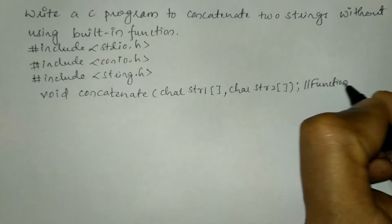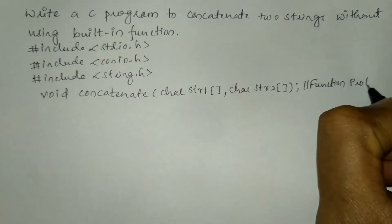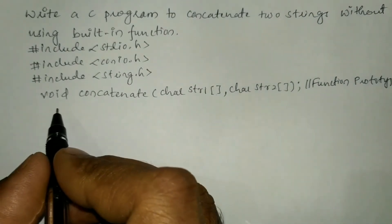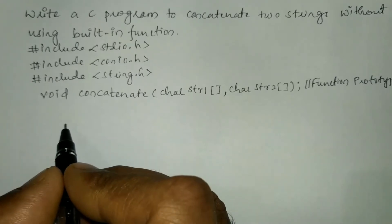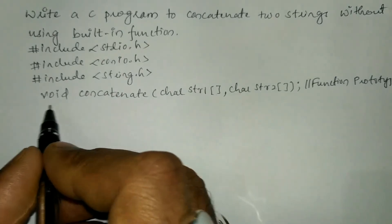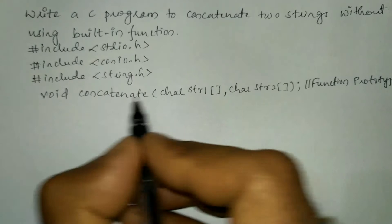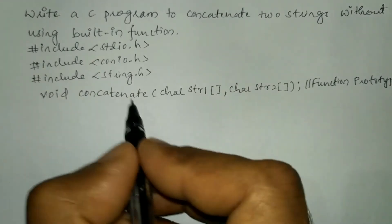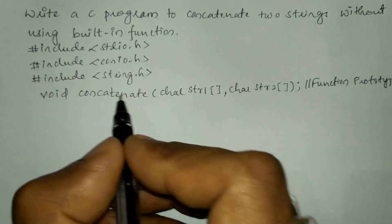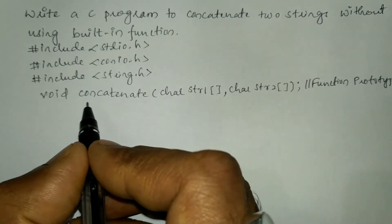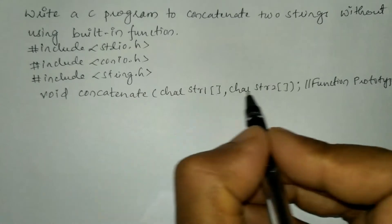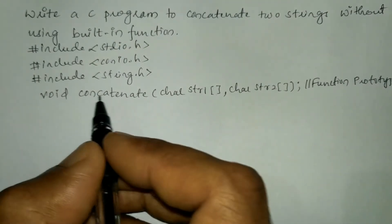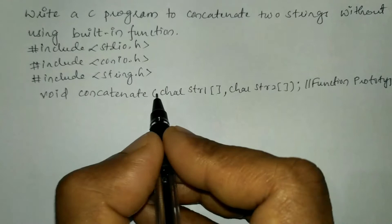This statement is called the function prototype. Just as we declare all variables before using them in a program, we have to declare the function before defining it. The function prototype creates an interface for the compiler, telling it that this particular function name with these two arguments is present — search for it and execute the statements present in it.